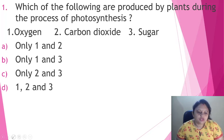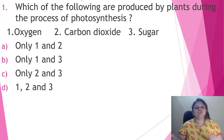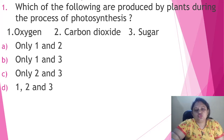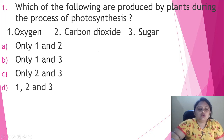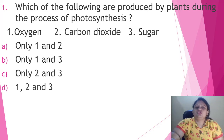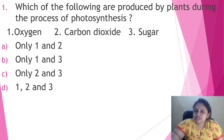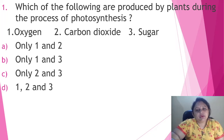Our first question is: which of the following are produced by plants during the process of photosynthesis? Option 1: oxygen, option 2: carbon dioxide, option 3: sugar. To answer this, we should first know what photosynthesis means. Photosynthesis is the process in which plants prepare their food on their own.